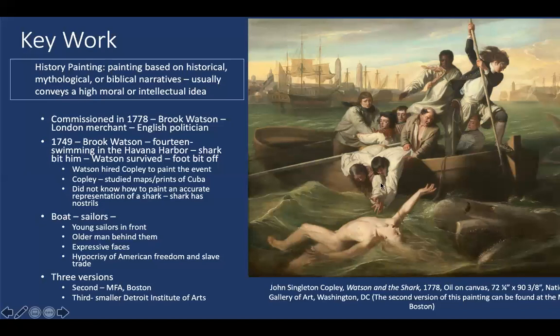This painting was commissioned by an Englishman who would have been on the English side of the American Revolution. Like many English people at the time, he thought that much of what the Revolution stood for was hypocritical, because the American colonists wanted freedom from the British crown yet still partook in the slave trade and slavery. The inclusion of the Black figure in the painting may point to that hypocrisy of the American Revolution and reflect the commissioner's political leanings and thoughts on the subject.